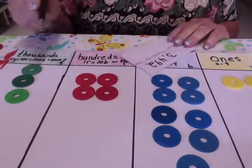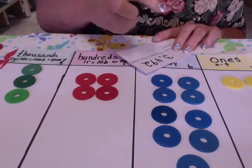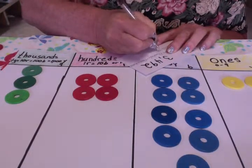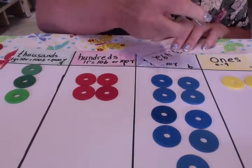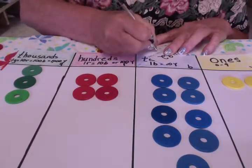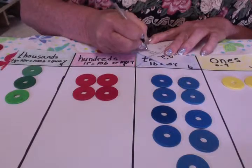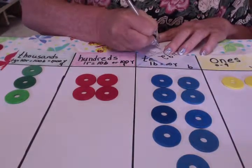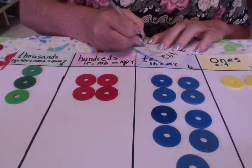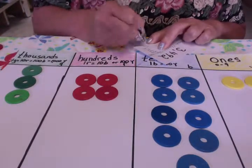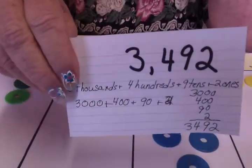Now let's write it out in our numbers. We have three thousand, plus four hundreds, nine tens which is ninety, and two ones. So we have three thousand, four hundred, ninety, two — which equals 3,492.